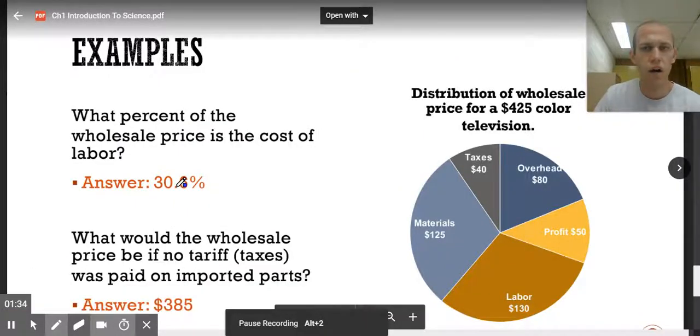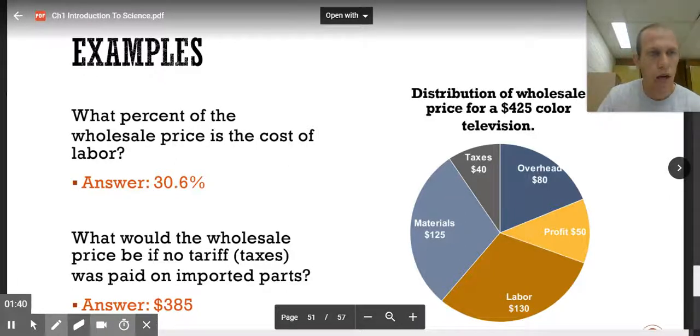Let's try another one. This is the distribution of wholesale price for a $425 color television. What percent of the wholesale price is the cost of labor? So the cost of labor is $130 and it costs $425. So when we divide those, we get 0.306. Written as a percent would be 30.6 percent.